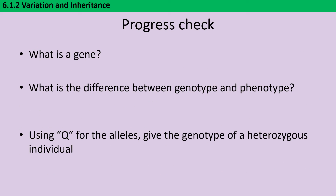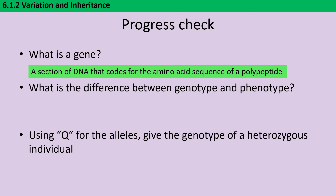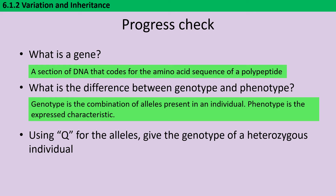Before we move on to some genetic diagrams, pause the video and write down your answers to these three questions. A gene is a section of DNA that codes for the amino acid sequence of a polypeptide or protein. The genotype is the combination of alleles present in an individual; the phenotype is their expressed or observable characteristic. In a heterozygous individual we would see one dominant allele and one recessive allele, shown with a capital letter and a lowercase letter.